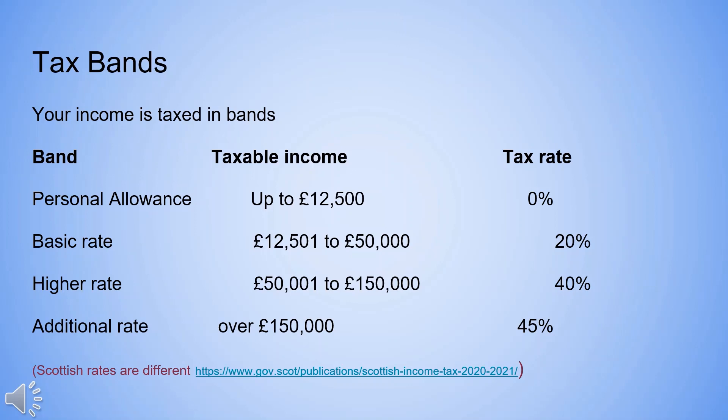Your income is separated into bands. The lowest band at zero taxation is your tax-free income. After that, the next band of your income is taxed at 20%, then 40%, then 45%, as this slide shows.